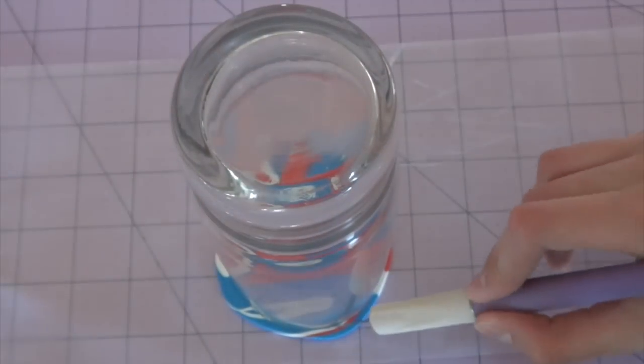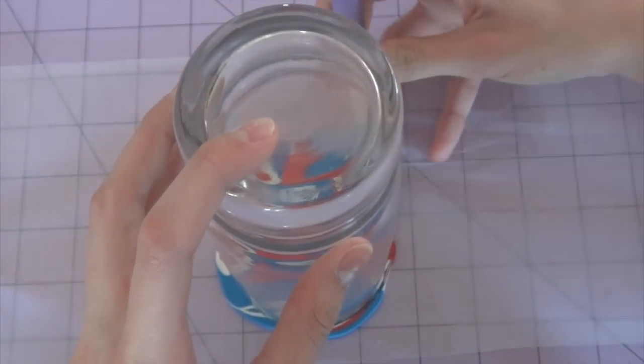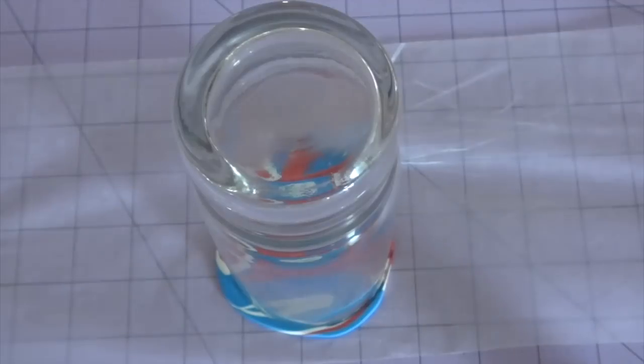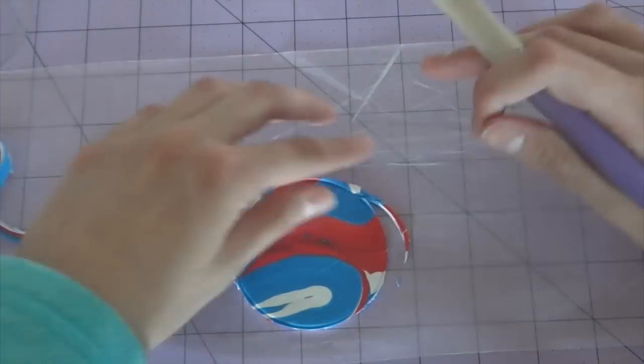Once it's all rolled out, you're going to take your glass again and you're going to just put it on top of the clay, and then using your exacto knife you're just going to cut around it so it's a perfect circle.